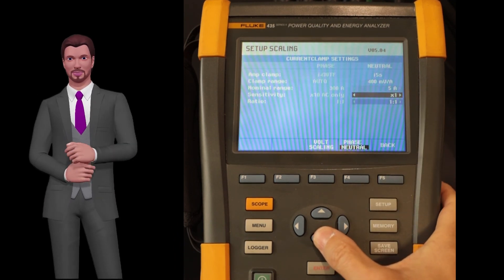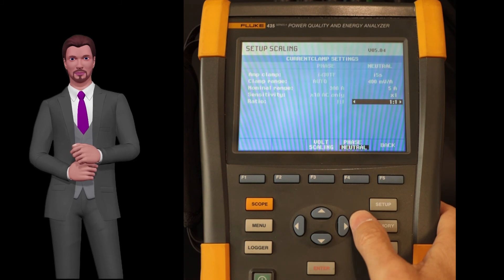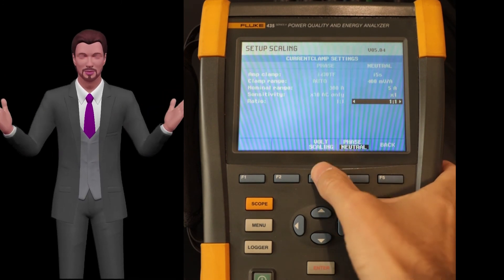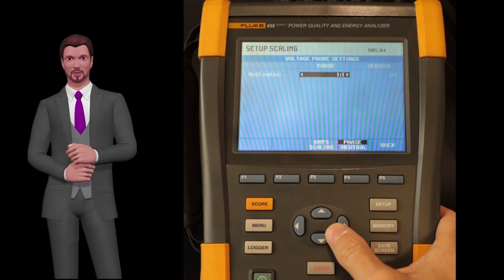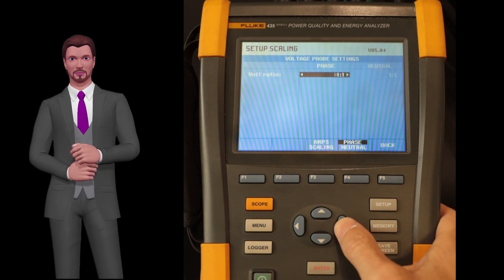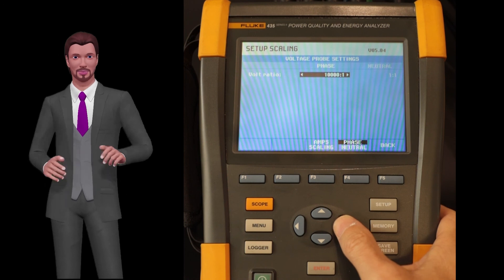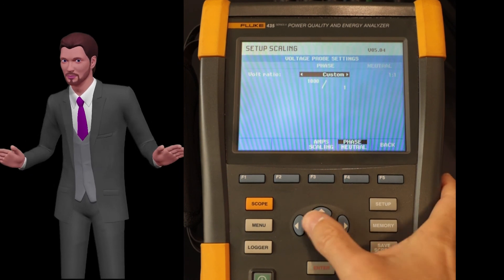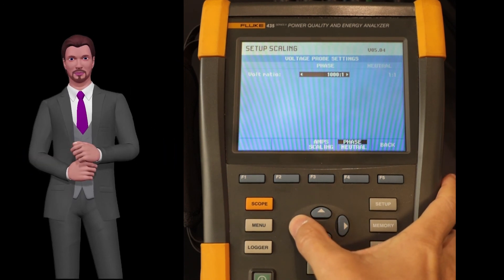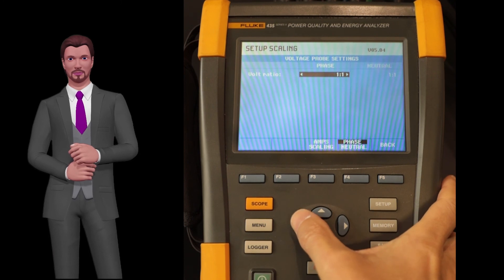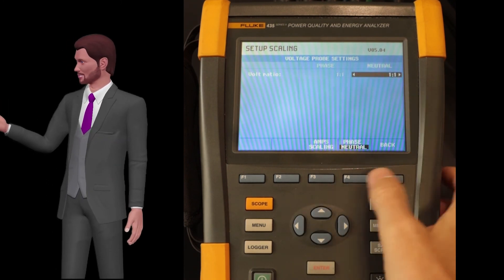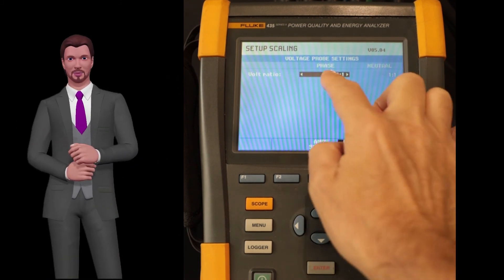Once the current probes have been configured, by pressing the F3 key we can also configure the ratio for the voltage measurement transformers if we are in a medium or high voltage installation. Again with F4 we can separately configure the phase voltages and the voltage between neutral and earth. Both voltage and current ratios should be set to a 1 to 1 ratio if working in a low voltage installation.